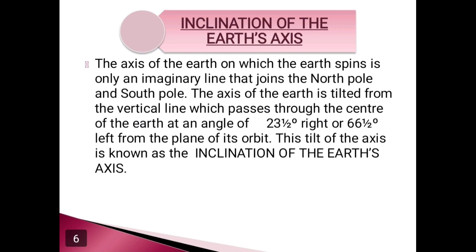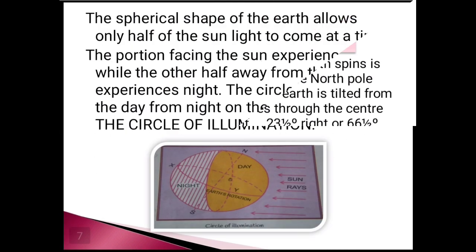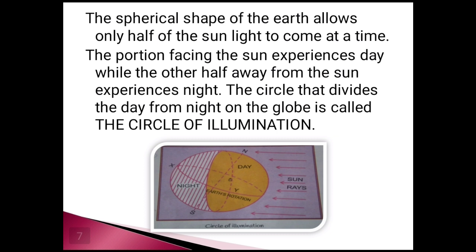The plane formed by the orbit is termed as the earth's orbital plane. The earth is spherical in shape, which allows only half of the sunlight to fall on it at a time. The portion facing the sun experiences day, and the parts that do not face the sun have night. The circle that divides the day from night on the globe is called the circle of illumination. Except for places at the equator, days and nights are not equal in all parts of the world.